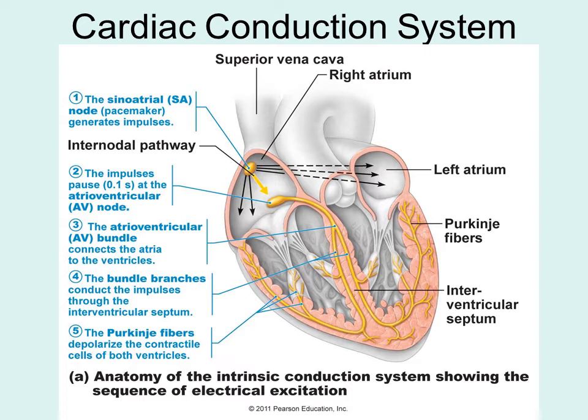From the AV node, the impulse passes down through the AV bundle, also known as the bundle of His, as you can see in the yellow conduction system. This runs in the interventricular septum, between the right and left ventricle. It then branches, with one branch continuing around towards the apex of the heart — known as the bundle branches — and curving back up towards the right ventricle, while the other branch curves up towards the upper portion around the left ventricle.